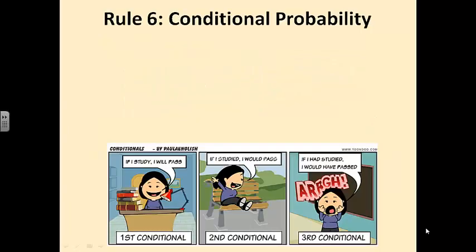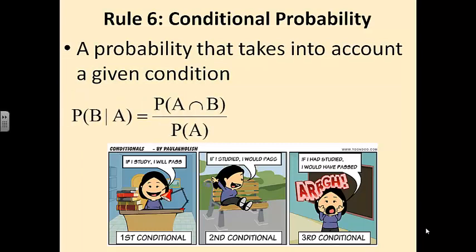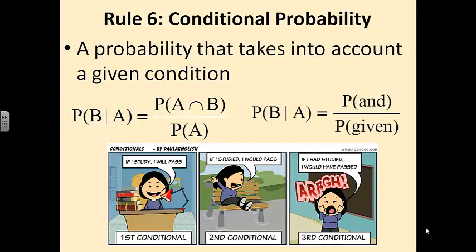That brings us to conditional probability — rule number six. Conditional probability is a probability that takes into account a given condition. Here's the formula: the probability of B given A equals the probability of A intersection B divided by the probability of A. You read this as the probability of A and B divided by the probability of the given condition.